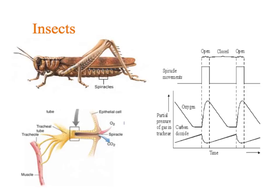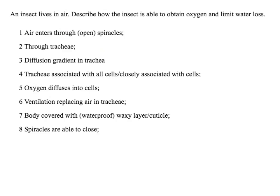You can see it's not the levels of oxygen that cause the spiracles to open, because oxygen has levelled off before the spiracles open. Here's your long answer question for how insects obtain oxygen.